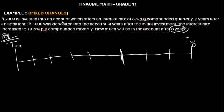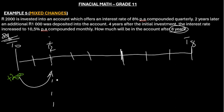2000 rand is invested into an account which offers an interest rate of eight percent, compounded quarterly. Then two years later — that is at t2 — some change has been made. Then two years later, the interest rate is eight percent compounded quarterly, so it is 0.08 divided by 4 (quarterly). This is my interest rate so far. Then an additional 1000 rand was deposited into the account.